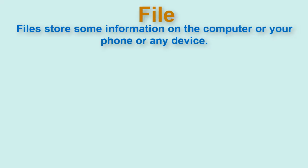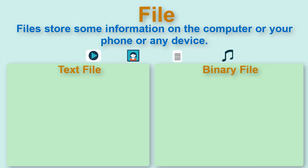Files are information stored on computer or your phone or any device like videos, images, documents, etc. At a broad level, files are divided into two types: text and binary.